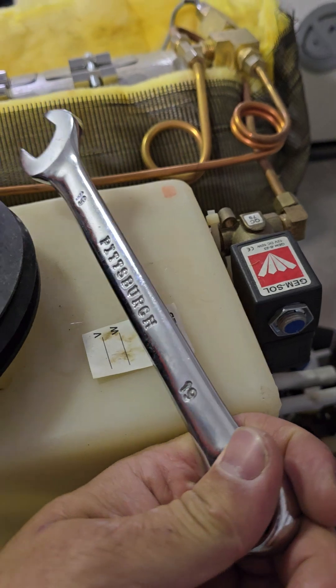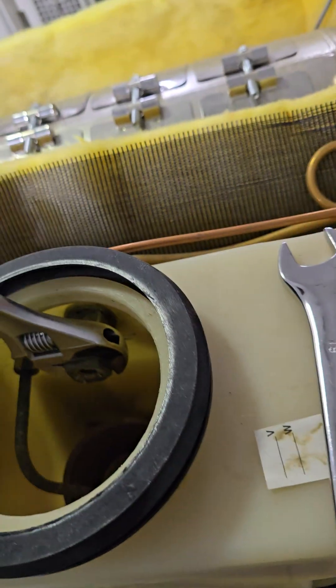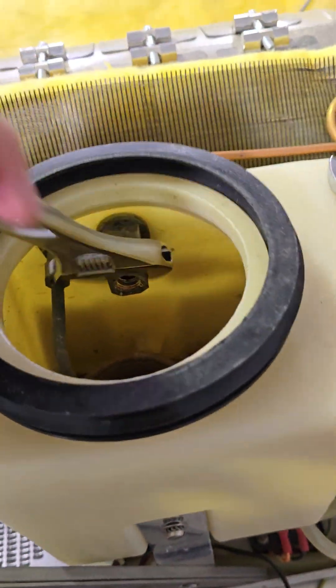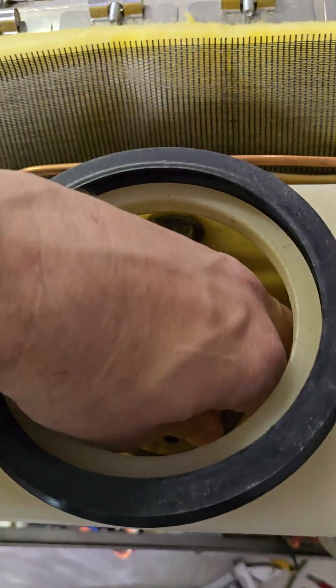The safety valve comes out pretty easy. All you need is, what is this, 19 millimeter? Whatever that is in standard, I can't think right now. Another wrench to put on here. Boom. Once it's out, you can reach in here pretty easy.